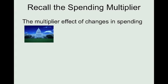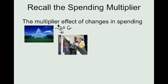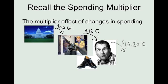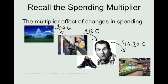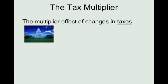When we talked about changes in government spending, you learned that if the government spends a little bit, then that money will be earned as an increase in somebody's income. Of that increase in their income, they will save a certain percent and then spend the rest. That rest gets spent and is earned by somebody else, who saves a little and spends the rest, and it continues and continues. That was for spending.